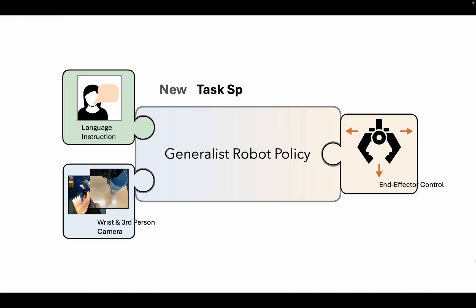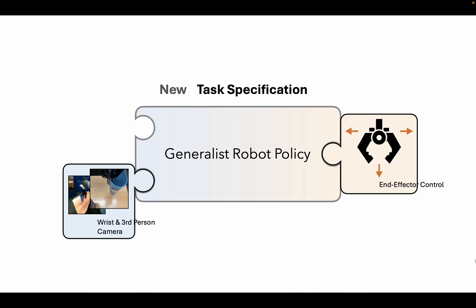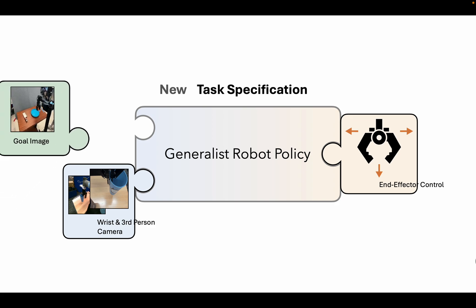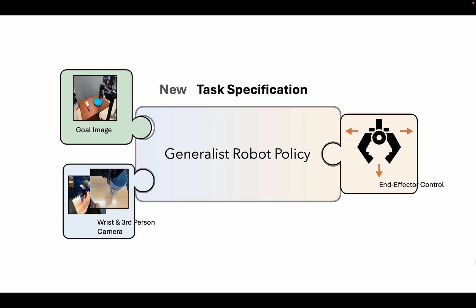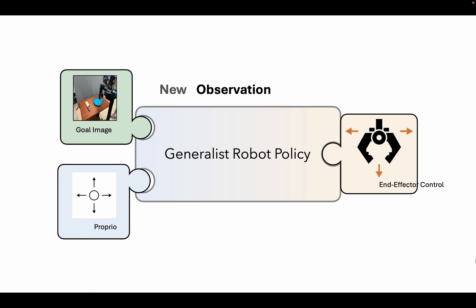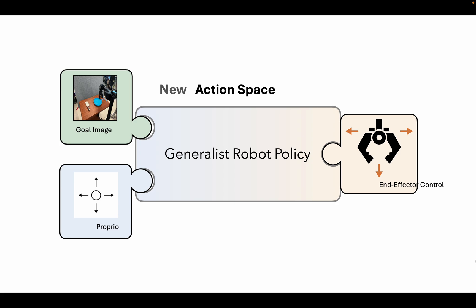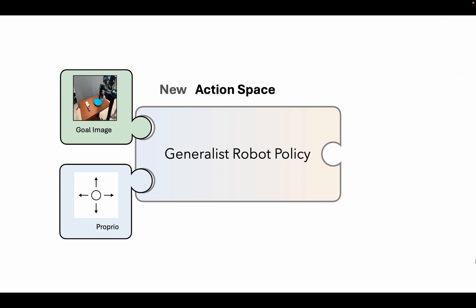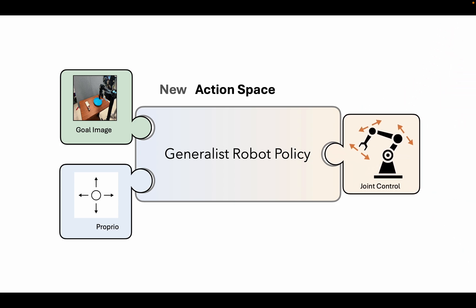This is of course easier said than done. Robotic data is very diverse across different types of task specification, different types of robot sensors, different numbers of cameras, different action spaces, and in general figuring out how to share information and knowledge across robots and tasks that look so different from one another is a very difficult problem.